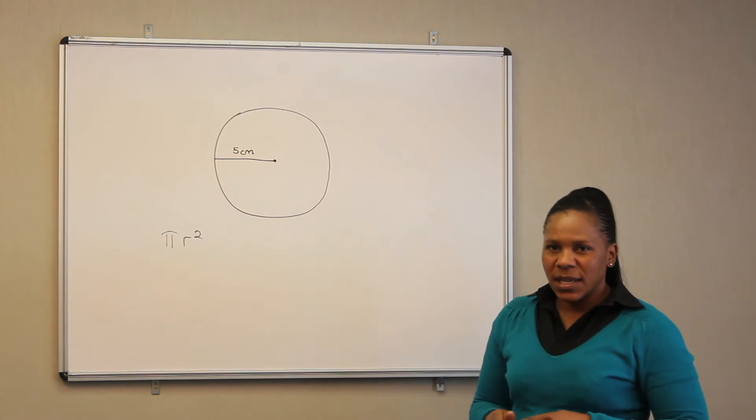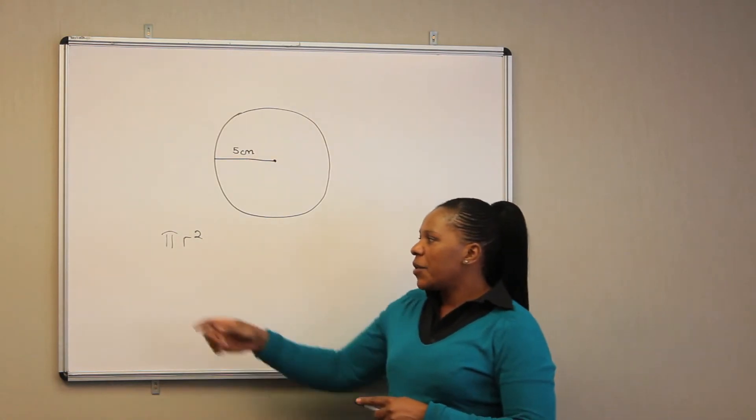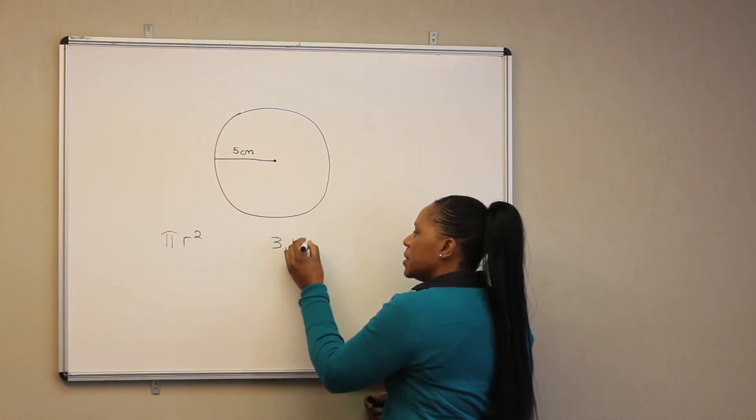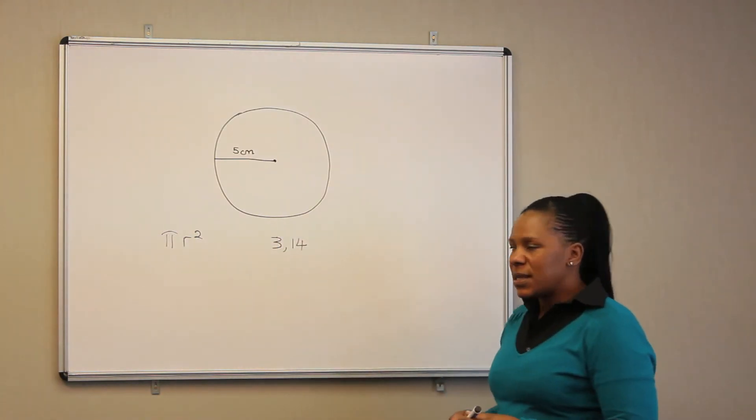Pi is a constant, and in this case we are going to use pi as 3.14, which is rounded off to two decimals.